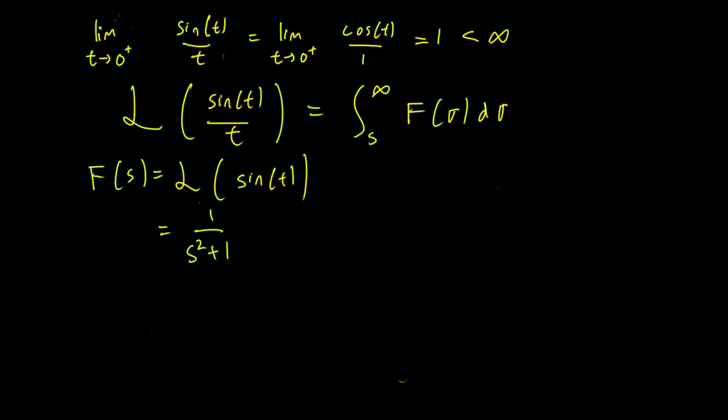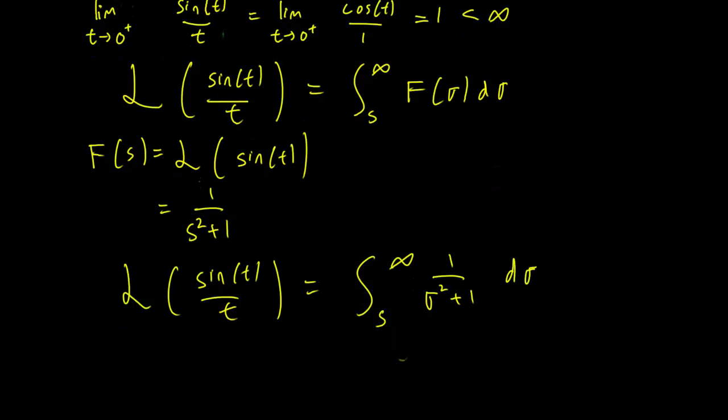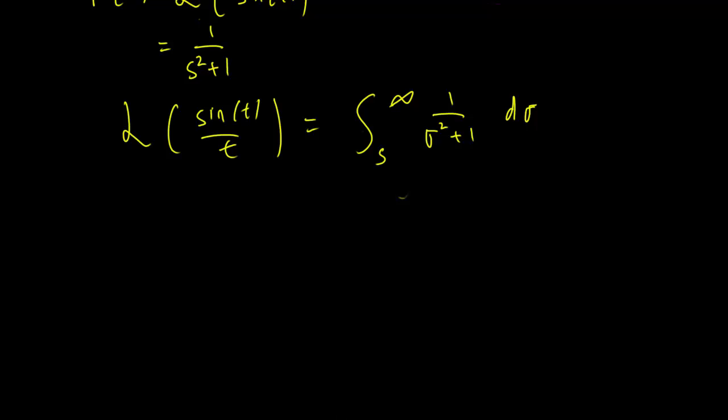And so we need to figure out the Laplace transform of sine t over t, and this is going to be equal to the integral from infinity to s of 1 over sigma squared plus 1 d sigma. This is going to require a trig substitution.